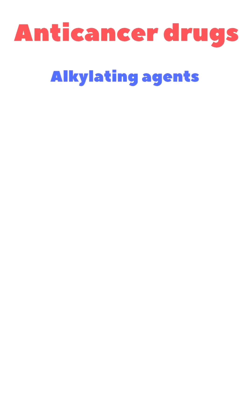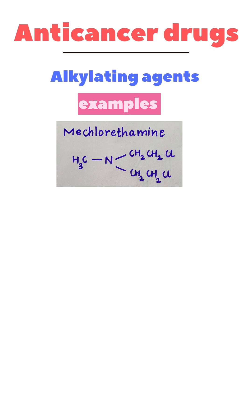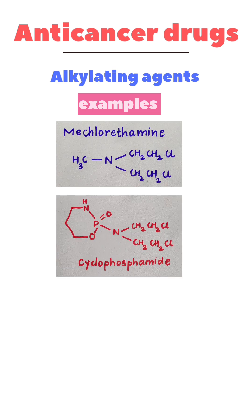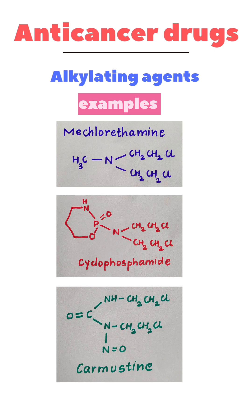Alkylating agents is a class of anticancer drugs. Examples include Mechlorithamine, Cyclophosphamide, and Carmustine belonging to the Nitrosourea class.